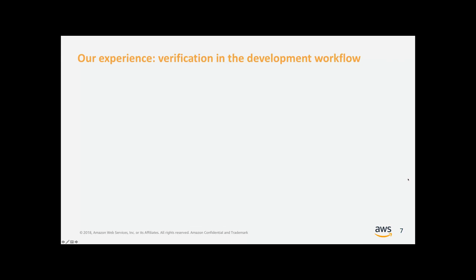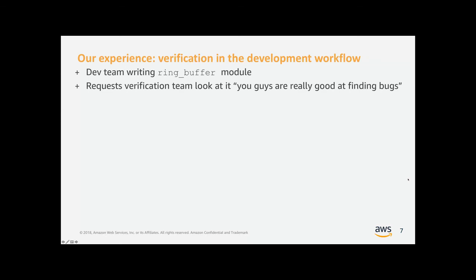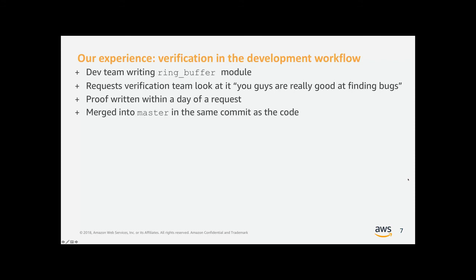It's much easier to verify code as it's being written than code written a long time ago. Our tooling, our strong relationship with the team, and the template library we built for how to write these proofs allowed us to write proofs much faster. As the development team was writing their ring buffer module, they requested us to take a look at their PR — they said, you guys are really good at finding bugs, let us know what you think about this code. We turned around and wrote a proof for that code within a day of the request while the PR was still open. They merged that proof into master with the same commit as the code, and we got feedback that this provided them more confidence than just having unit tests — because now they knew it's not only correct in terms of unit testing, it's memory safe.